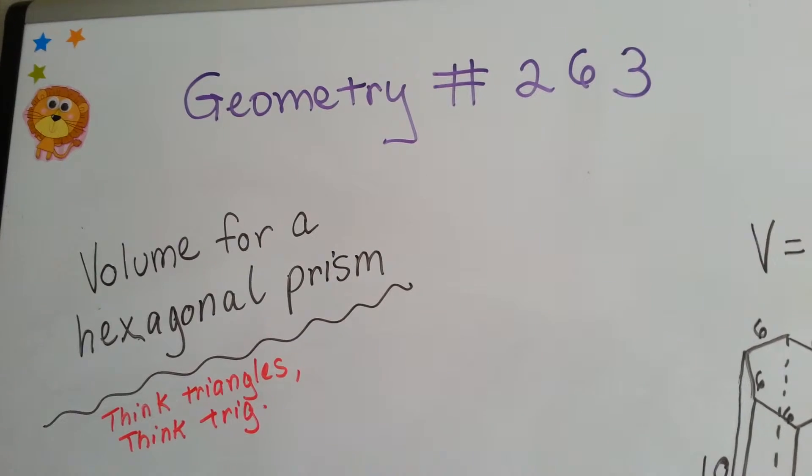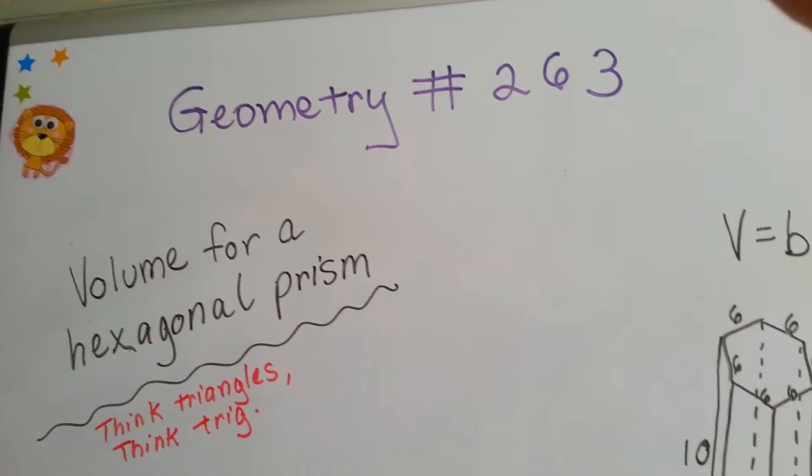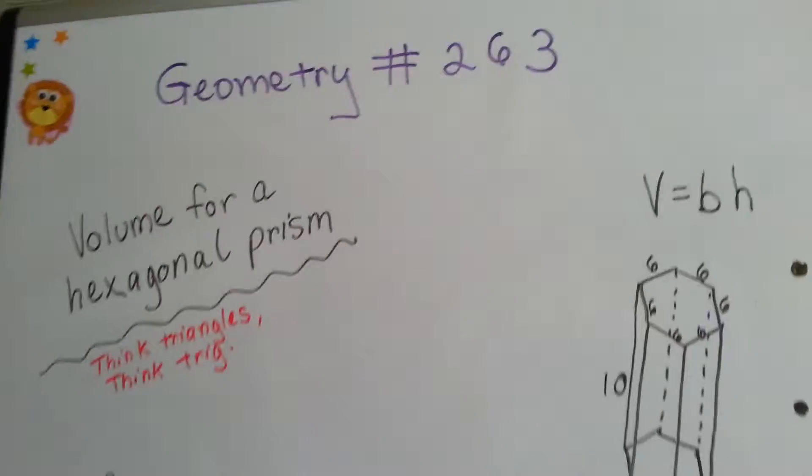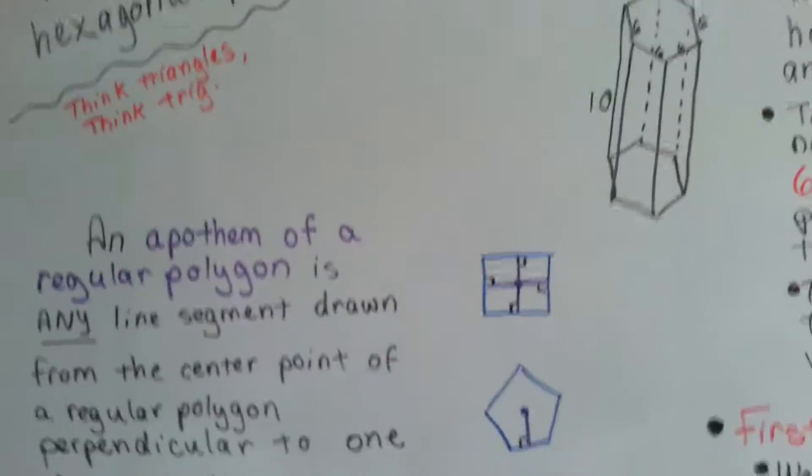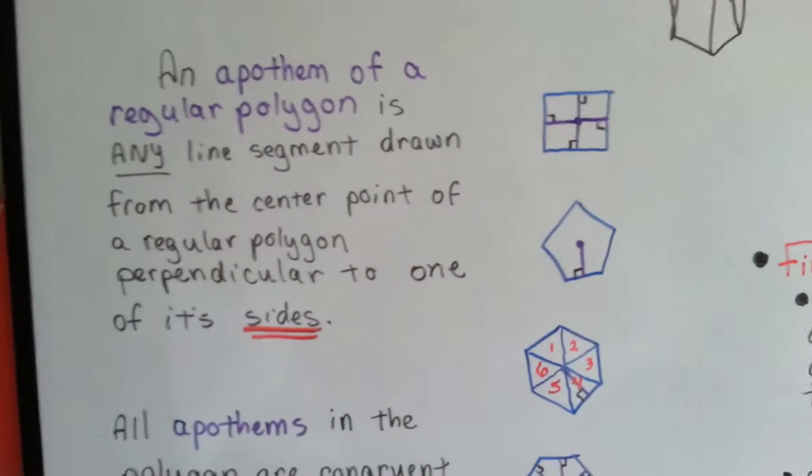If you want to know how to do a pentagonal prism, just watch the video just before this one, which is 362. It's basically the same method. It's almost identical. It's still breaking it into triangles and using trig. It's just the numbers are slightly different.